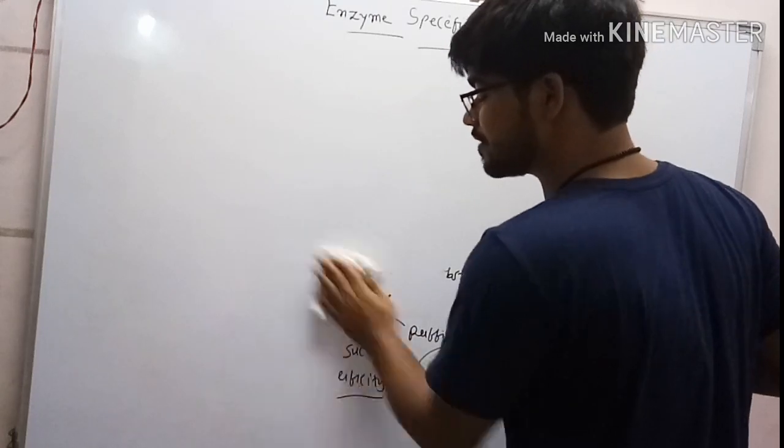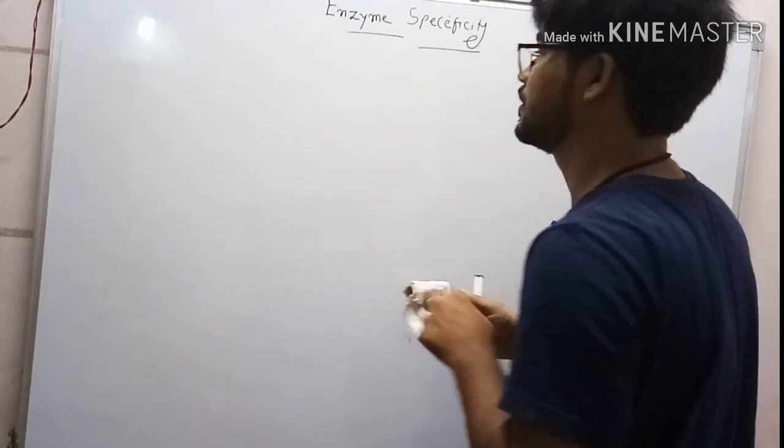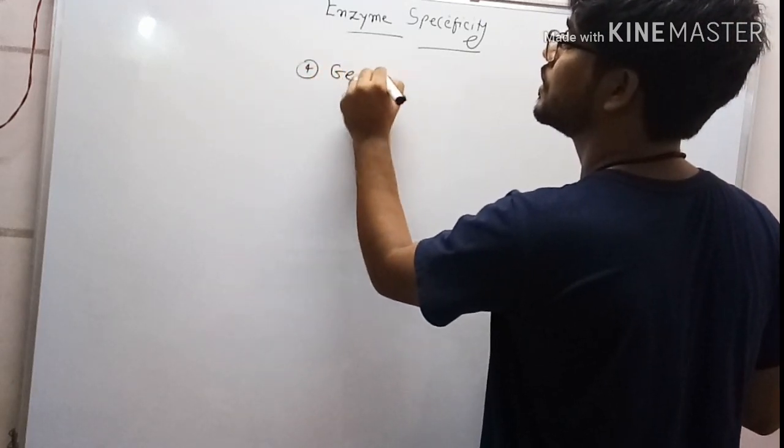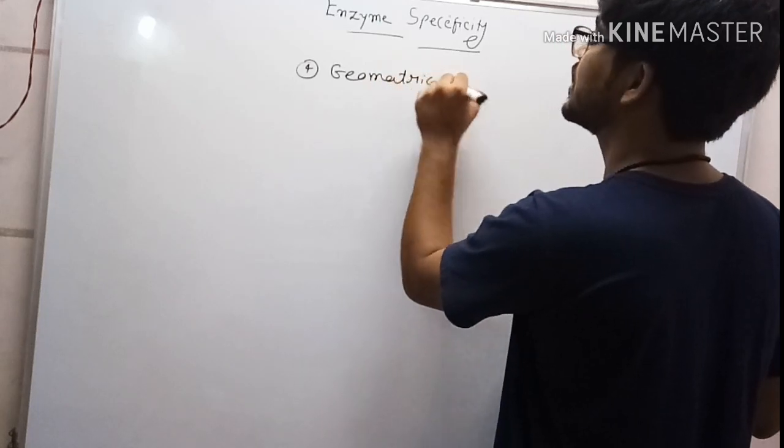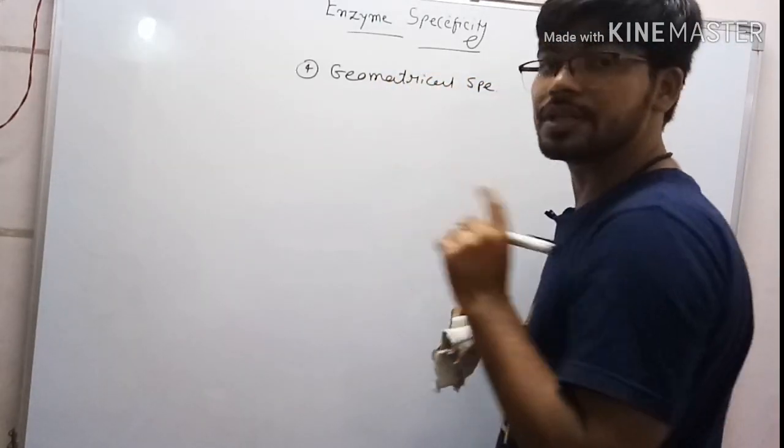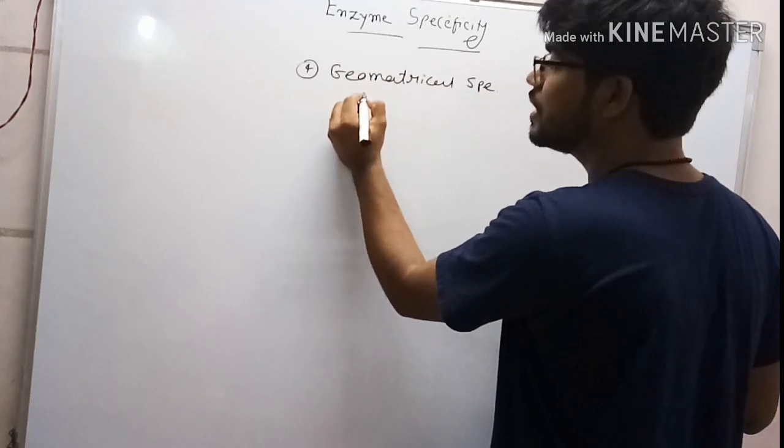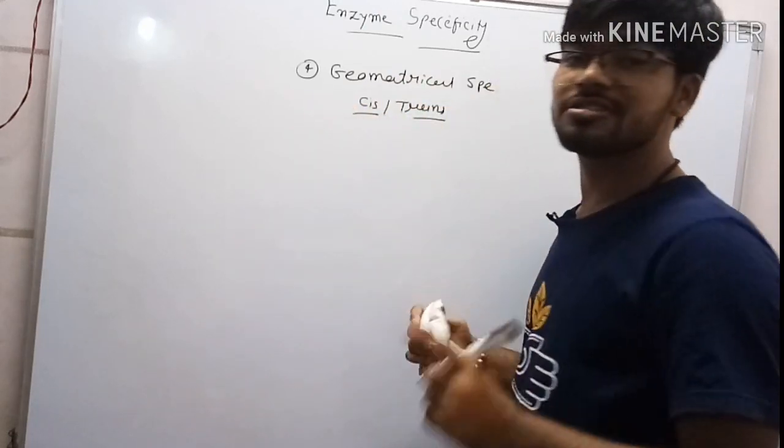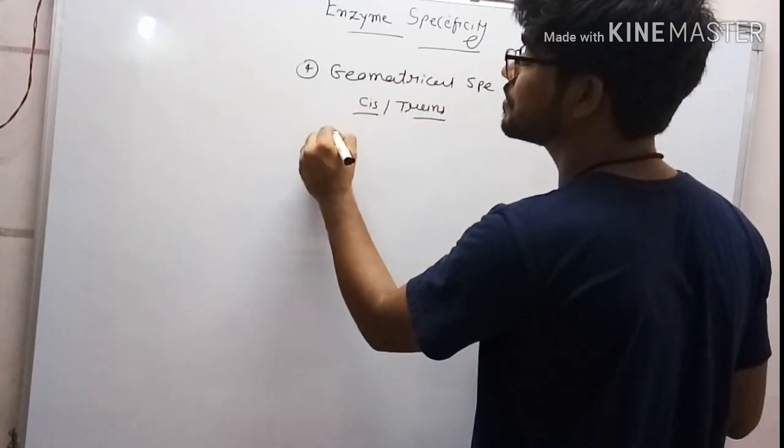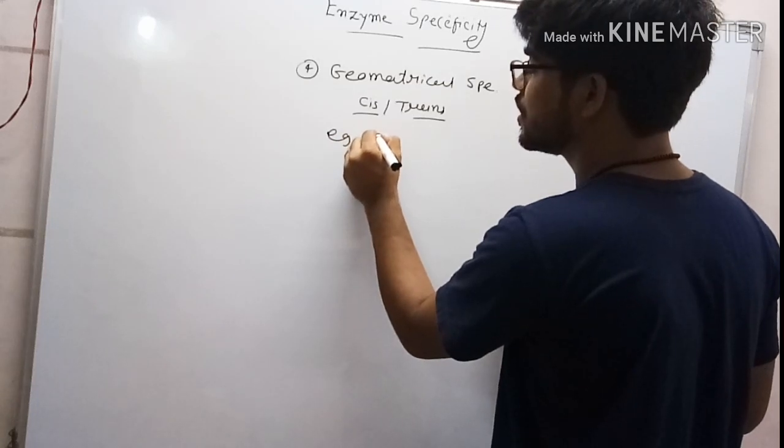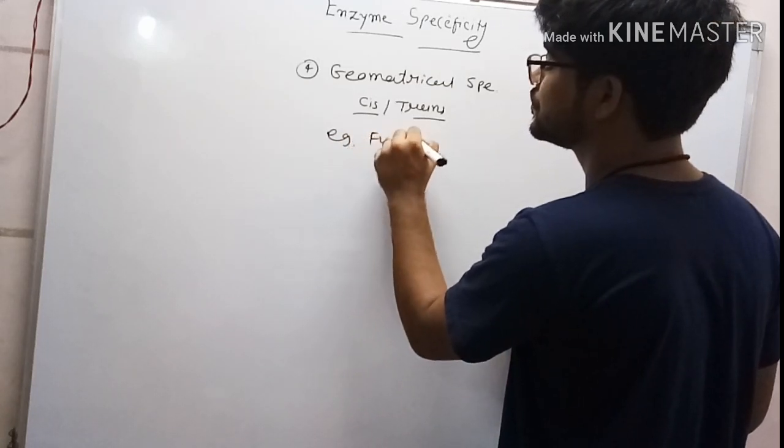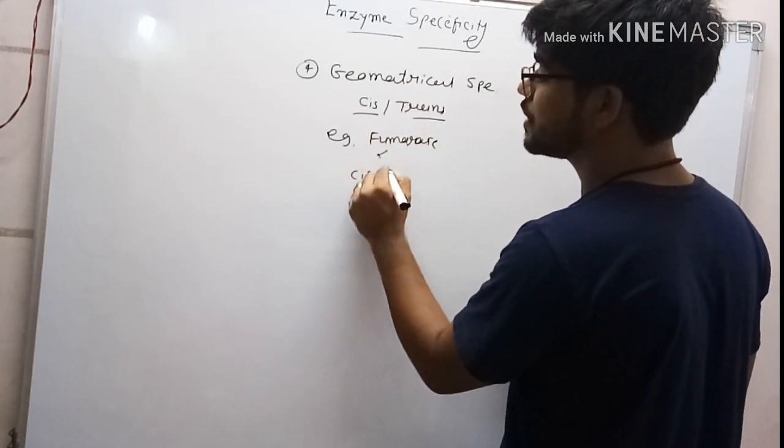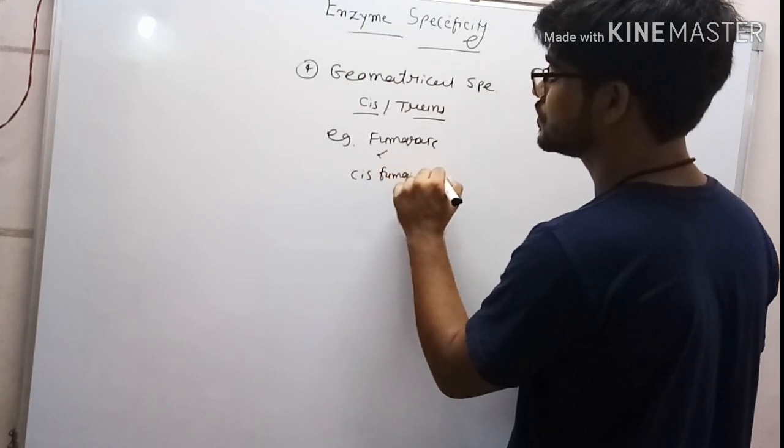The fourth is geometrical specificity. This is based on cis and trans conformation. The best example is fumarase, which can work on cis and trans forms of fumarate and malate.